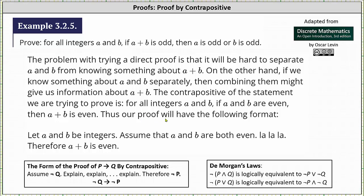Thus our proof will have the following format: we will let a and b be integers, we will assume that a and b are both even, provide explanation, and therefore a plus b is even.